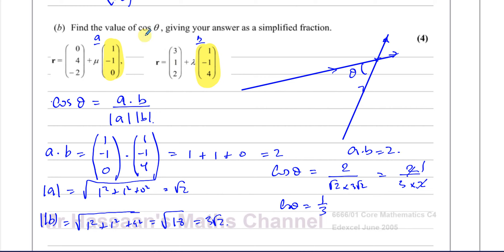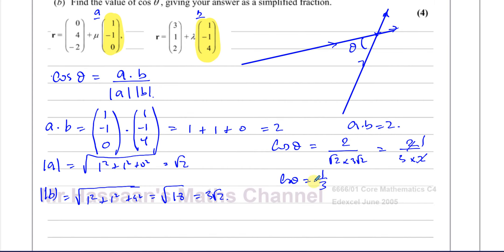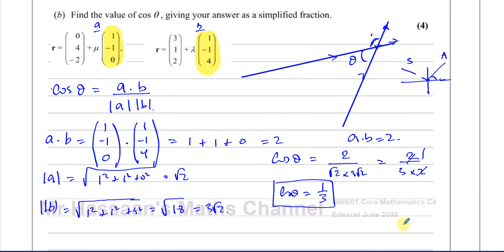Since cos θ is positive, the angle is acute — which is consistent with θ being the acute angle between the lines. The question asks for the value of cos θ, not the angle itself. Be careful: many students write 'θ =' and give the angle in degrees. The question specifically asks for the value of cos θ, so the answer is cos θ = 1/3.